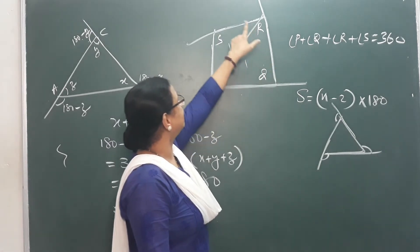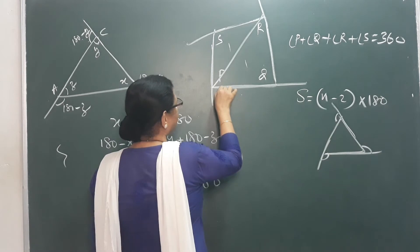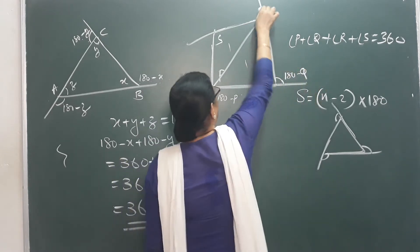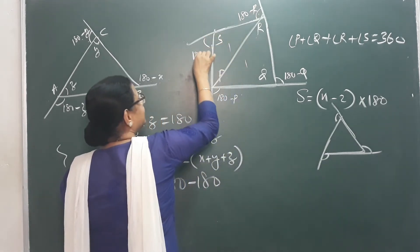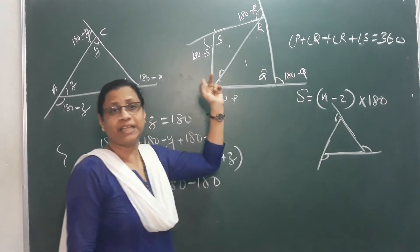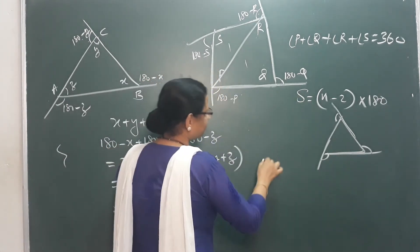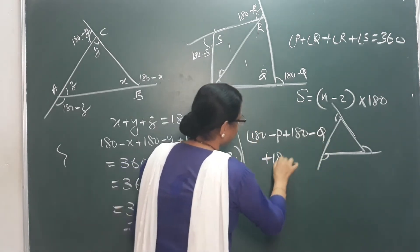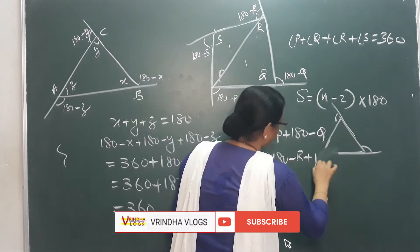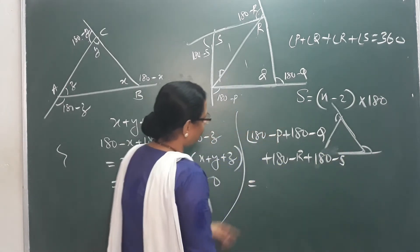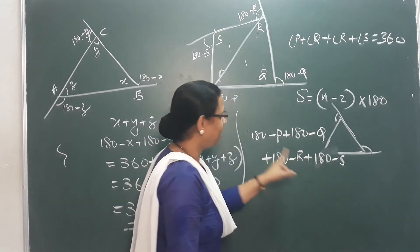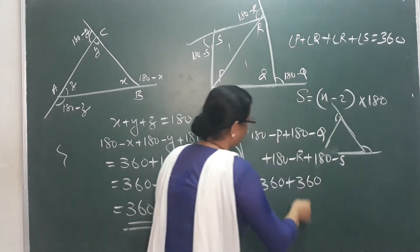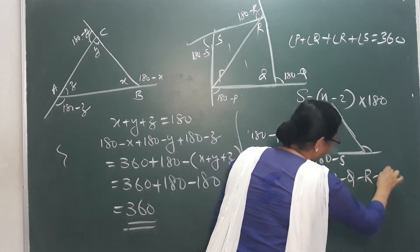The outer angles of the quadrilateral are: (180 minus P), (180 minus Q), (180 minus R), and (180 minus S). Adding all outer angles: (180 minus P) plus (180 minus Q) plus (180 minus R) plus (180 minus S). We have four 180s: 180 plus 180 is 360, plus another 360, giving 720. Then we subtract P plus Q plus R plus S.